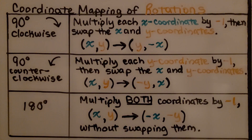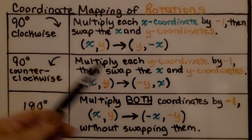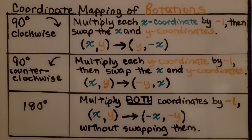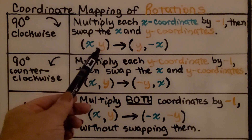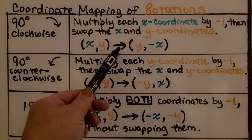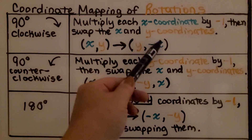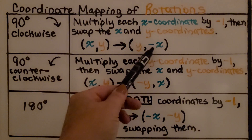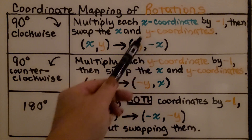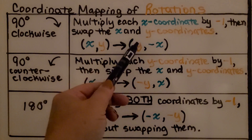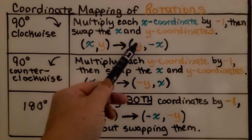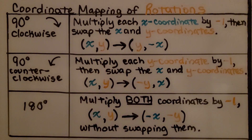Here is the coordinate mapping of rotations. For a 90 degree clockwise rotation, we multiply each x-coordinate by negative 1, then swap the x and y-coordinates. So (x, y) maps to: multiply x by negative 1, then swap — so y becomes the new x and negative x becomes the new y.